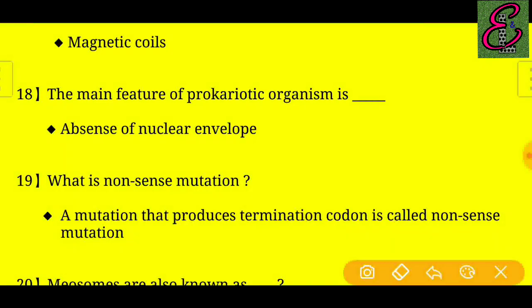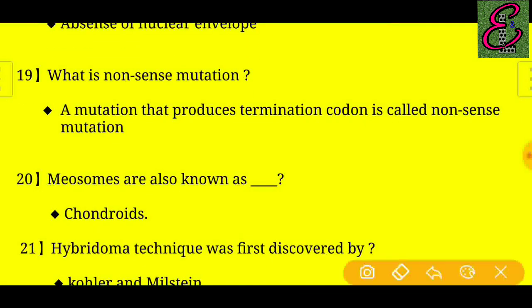Question number eighteen: The main feature of a prokaryotic organism is the absence of a nuclear membrane. Question number nineteen: What is nonsense mutation? Answer: A mutation that produces a termination codon is called nonsense mutation.